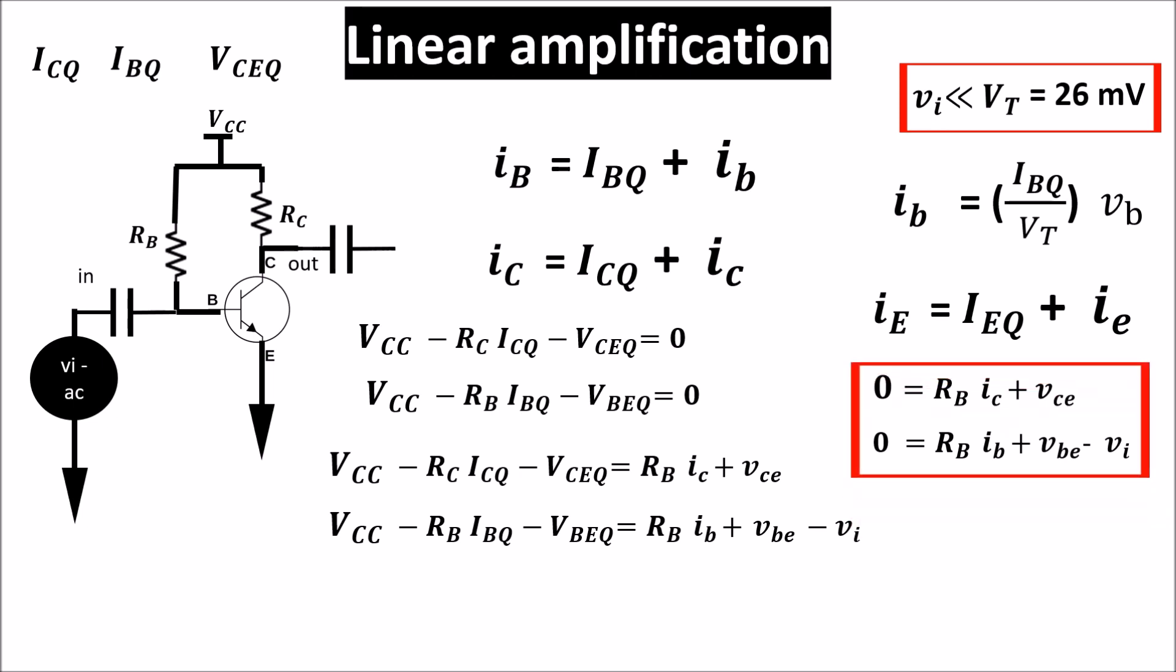This equation can be obtained by setting all DC currents and voltages equal to zero. So the DC voltage sources become short circuits and any DC current sources would become open circuits. While these equations can be obtained by setting to zero all the AC sources. So these results can be obtained applying superposition to the circuit.